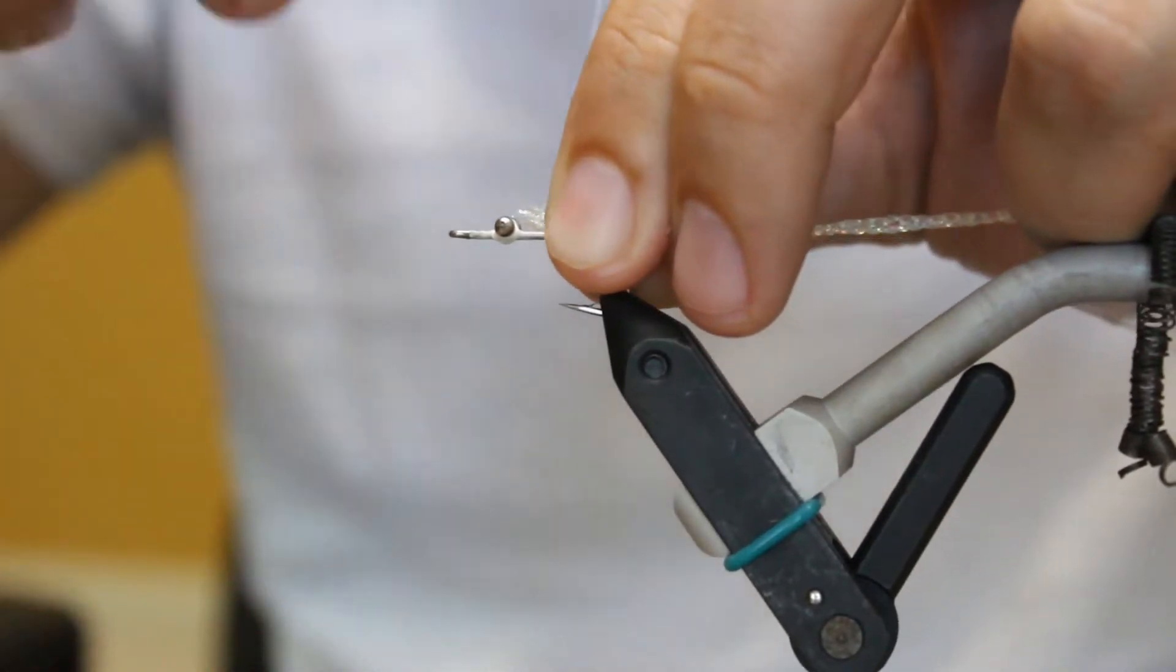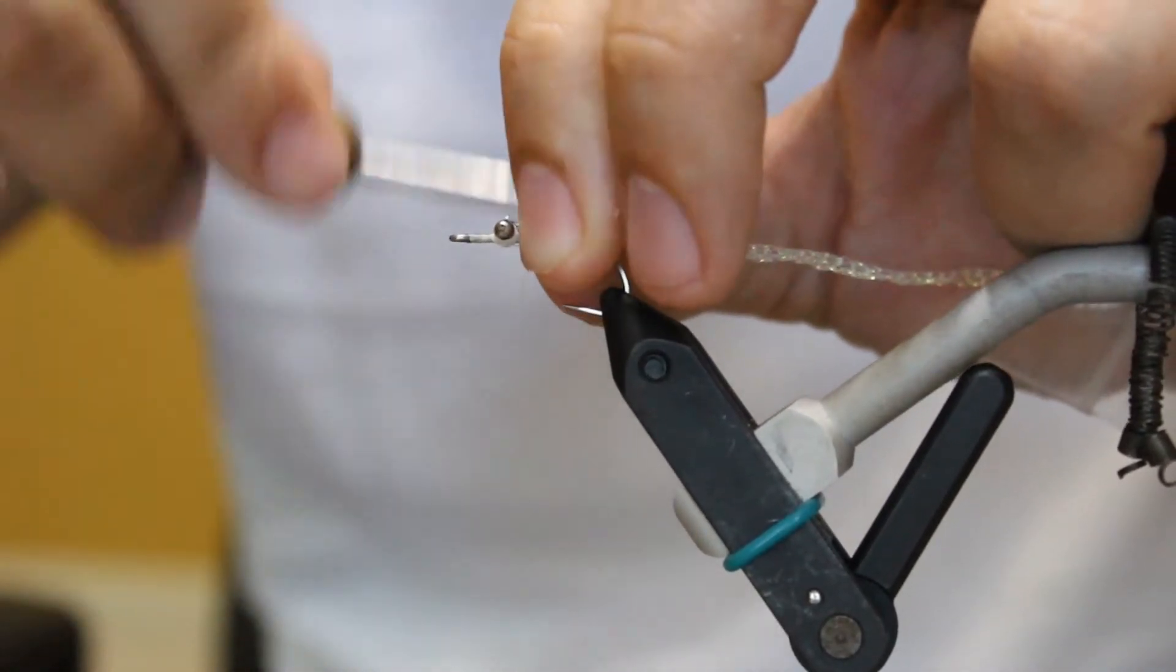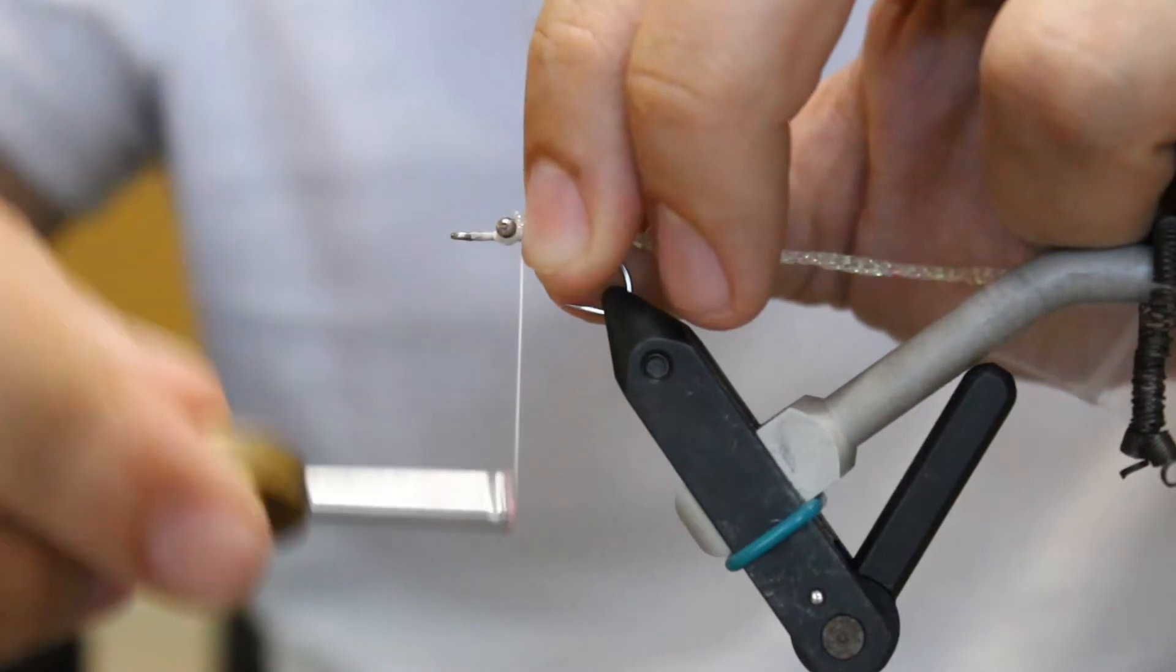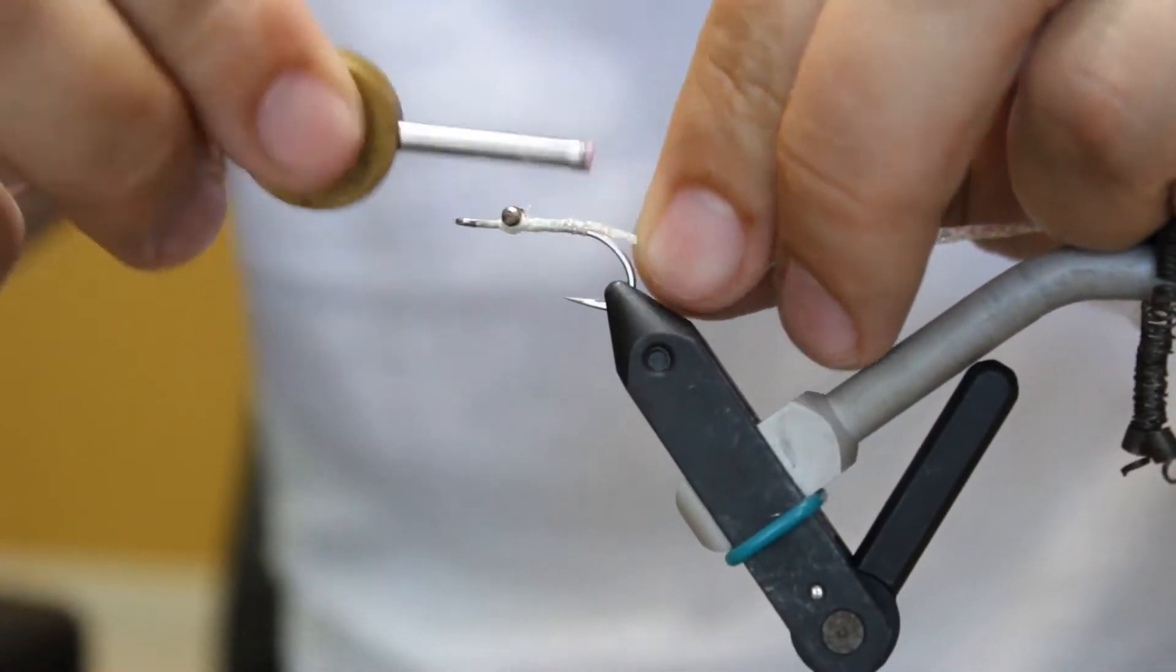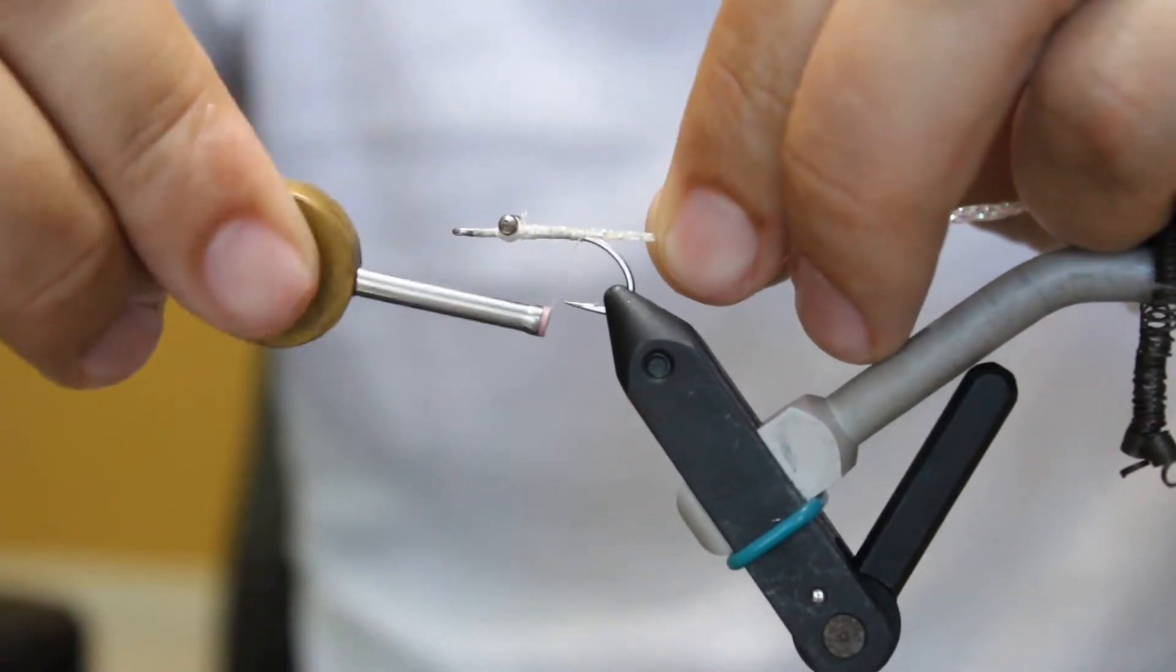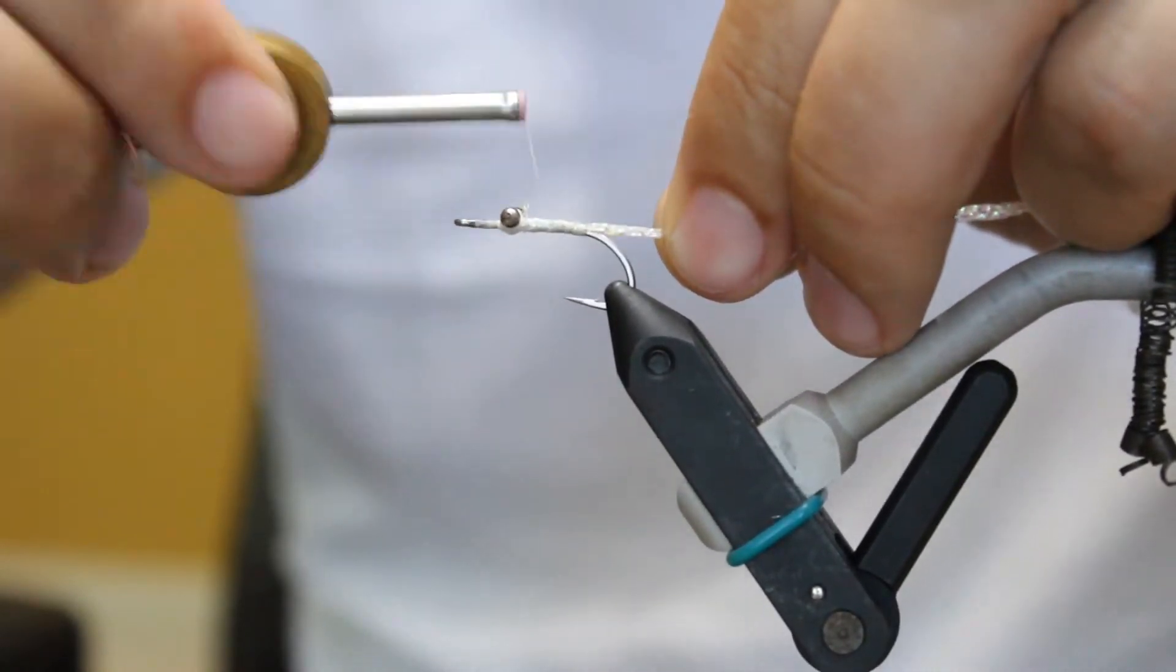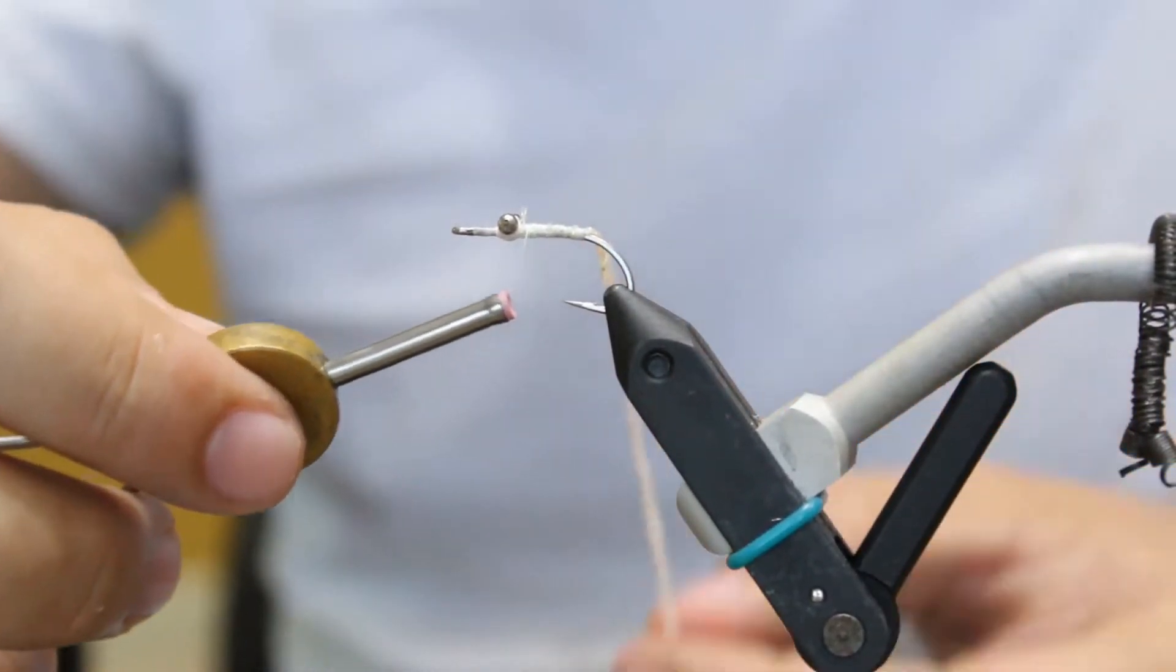I will actually wrap it all the way up to the eyes, and that's just so it isn't a weird lump in the back whenever I start twisting this to the front. So I've tied in my braid here.